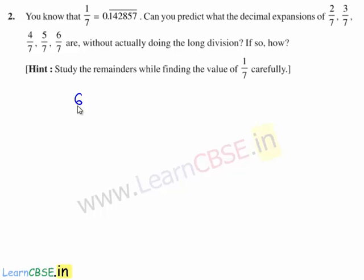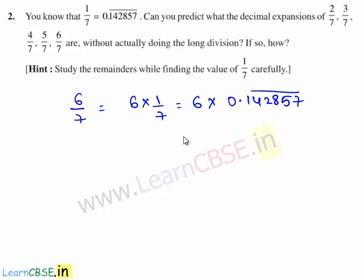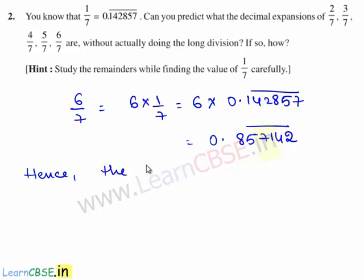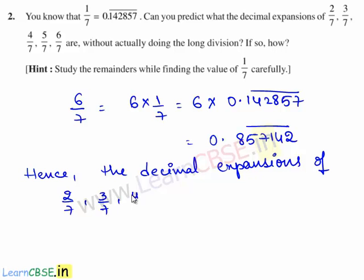So, the decimal expansion of 6 by 7 is obtained by multiplying 6 with 1 by 7. That is, we multiply 6 with the decimal expansion of 1 by 7, which is 0.142857 bar. So, 6 times 0.142857 bar is equal to 0.857142 bar. Hence, the decimal expansions of 2 by 7, 3 by 7, 4 by 7, 5 by 7, and 6 by 7 are obtained without doing the actual long division.